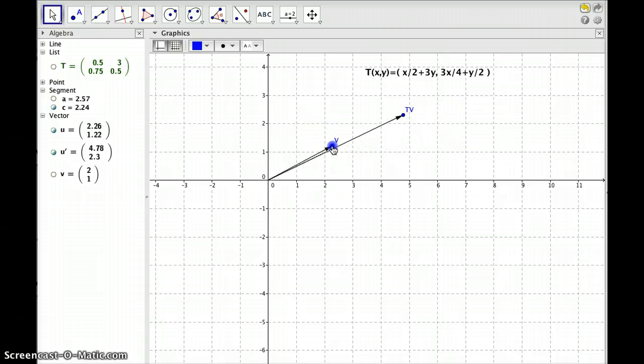That means I'm looking for places where the vector and the output are parallel. So right here, this is an eigenvector. Okay, any vector along this line, when I apply the transformation to it,